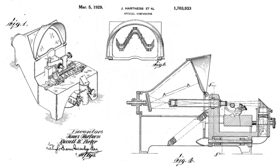Another way is that various points on the silhouette are lined up with the reticle at the center point of the screen, one after another, by moving the stage on which the part sits, and a digital readout reports how far the stage moved to reach those points.